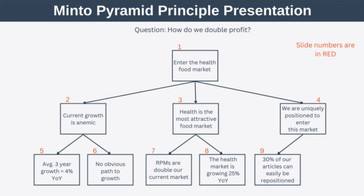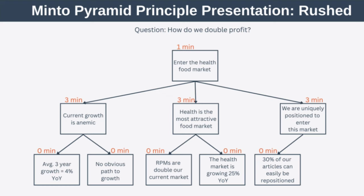One of the reasons the Minto Pyramid is so useful is because of its flexibility. Suppose you're due to present to your board of directors but others giving presentations before you overrun and you're left with just 10 minutes for a presentation you'd initially planned to use a full hour for. With the Minto Pyramid this isn't an issue — you can simply adapt your presentation on the fly and spend a minute on your main point and then three minutes on each of your main supporting arguments.